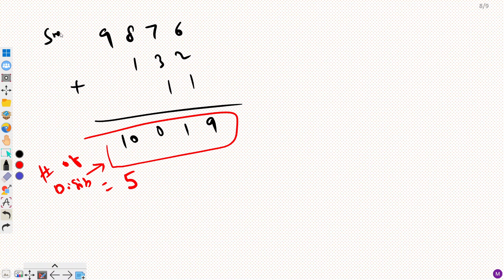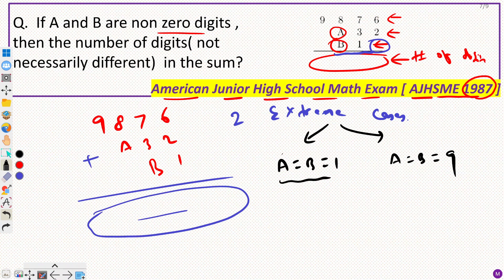This was my smallest possible one. Now let us try for largest, second extreme case. So 9, 8, 7, 6. We have A32, B1. A32, B1.